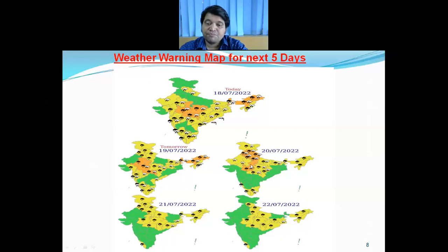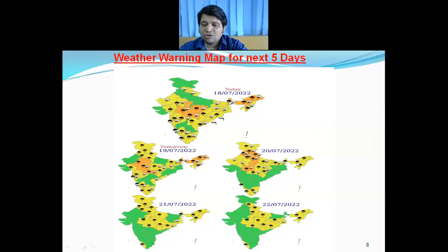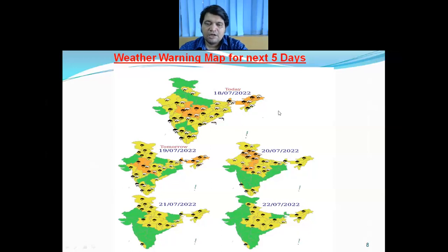Over Sub-Himalayan West Bengal and Sikkim, there is a likelihood of isolated heavy to very heavy rainfall today and tomorrow, 18th and 19th July. Isolated heavy to very heavy rainfall is also expected over Arunachal Pradesh, Assam, and Meghalaya on 18th and 19th. Thereafter, the northeastern states along with Sub-Himalayan West Bengal and Sikkim are likely to receive isolated heavy rainfall. That's all for today; we will meet again tomorrow with the daily weather briefing for the next five days' weather warning. Thank you and goodbye.